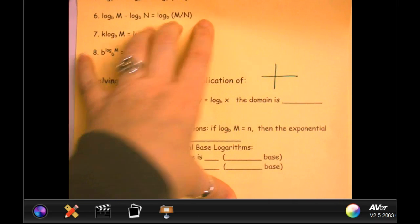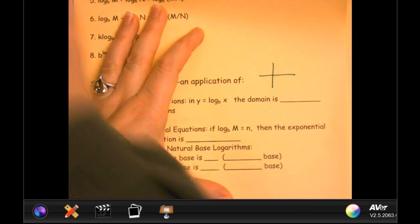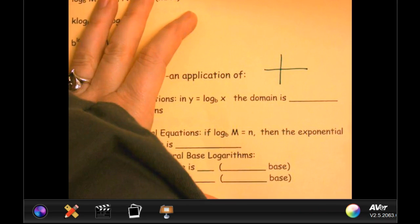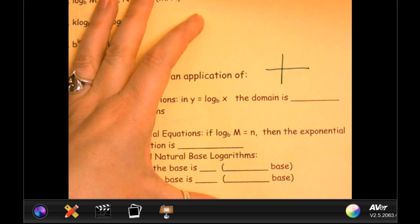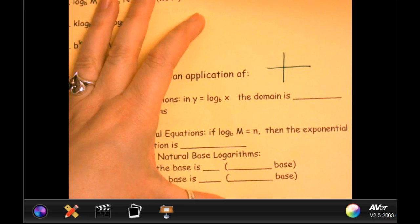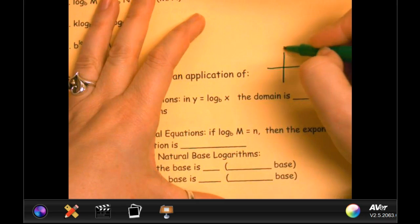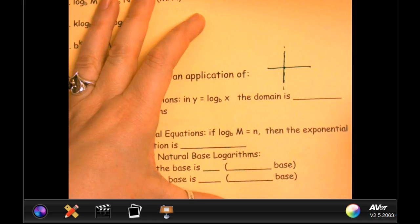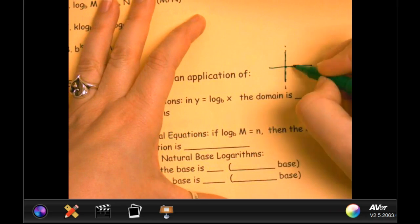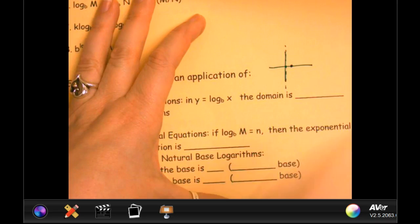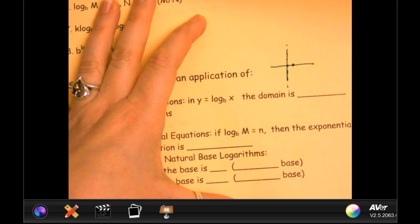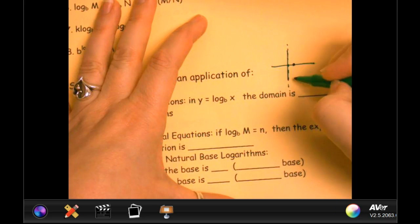All right, so the parent function for a log, where is my asymptote? My x equals 0, so it's the y-axis, so it's x equals 0. So then it always goes through 1, 0, and if b is greater than 1, then it looks like this.